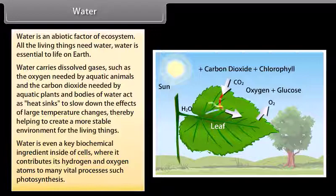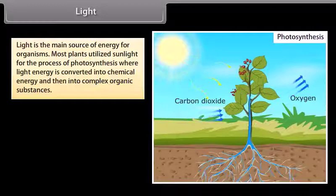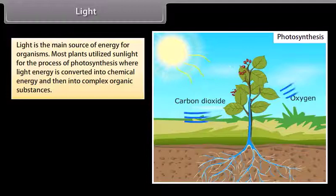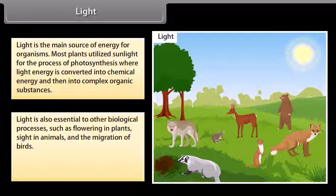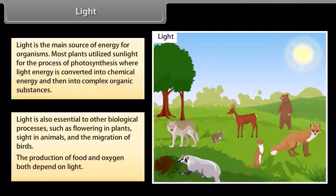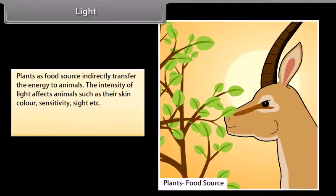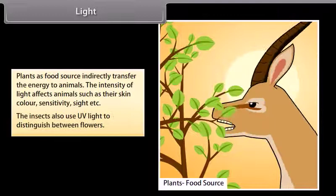Light is the main source of energy for organisms. Most plants utilize sunlight for the process of photosynthesis, where light energy is converted into chemical energy and then into complex organic substances. Light is also essential to other biological processes such as flowering in plants, sight in animals, and the migration of birds. The production of food and oxygen both depend on light. Plants as a food source indirectly transfer energy to animals. The intensity of light affects animals such as their skin color, sensitivity, and sight. Insects also use UV light to distinguish between flowers.